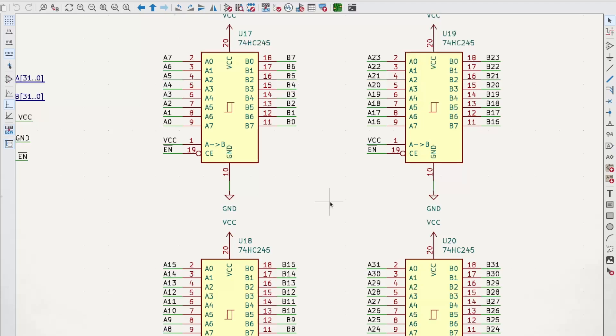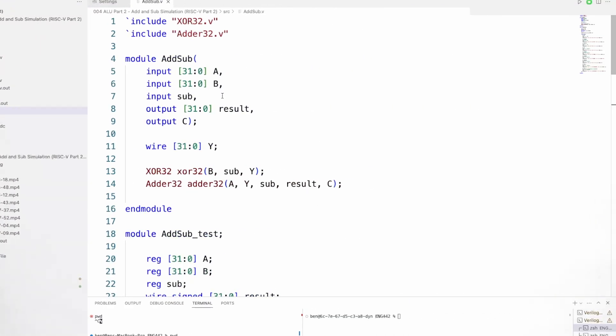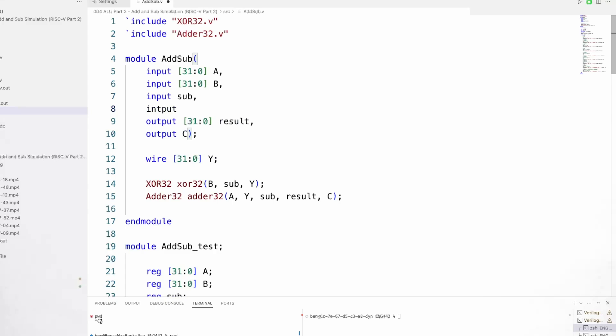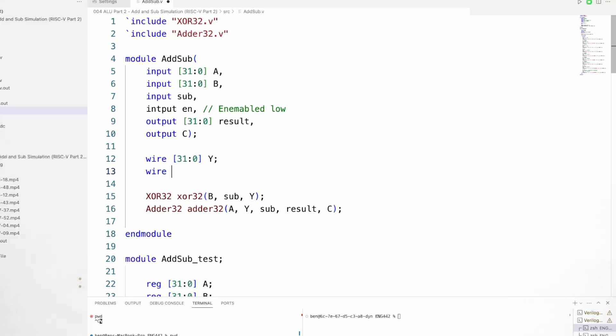I will quickly add this into the Verilog simulation to make sure that we are consistent between the circuit and the ADD sub module. I will need an additional input for our enable signal. And I will make a comment here saying that this is enabled low. We will also need to separate out the result of the ADD from the result of the ALU. So I will add an extra wire here for the result from the ADD.